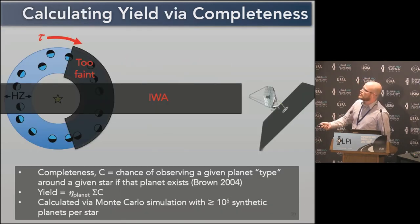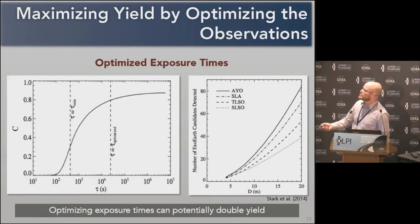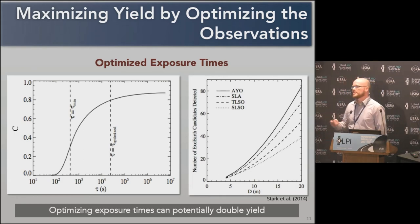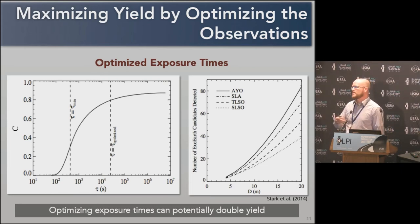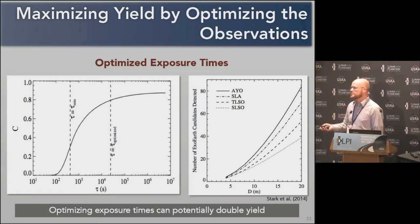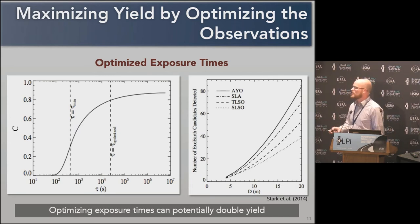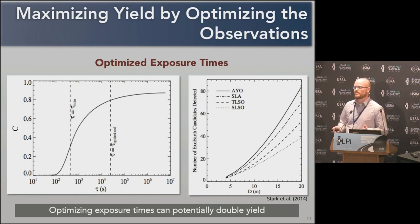What's unique about our code is we recognize that completeness is a function of exposure time. We take that function, calculate its derivative, and use this to optimally distribute exposure time across different observations. We optimize many aspects: which stars are selected, how many visits to each star, the delay time between stars, and which coronagraph is assigned to which star — all with the intent of maximizing the yield of the mission. We want the code to tell us what is the most efficient way to actually execute the observations.